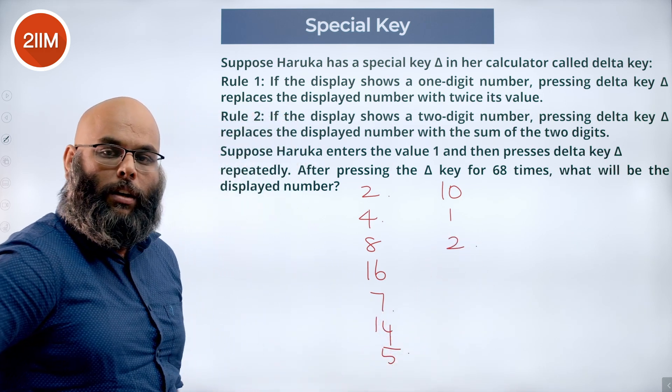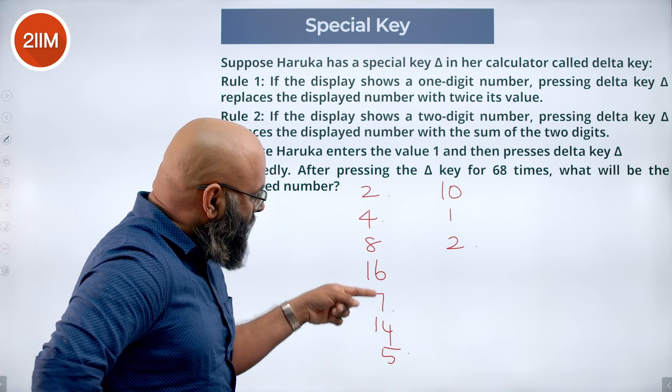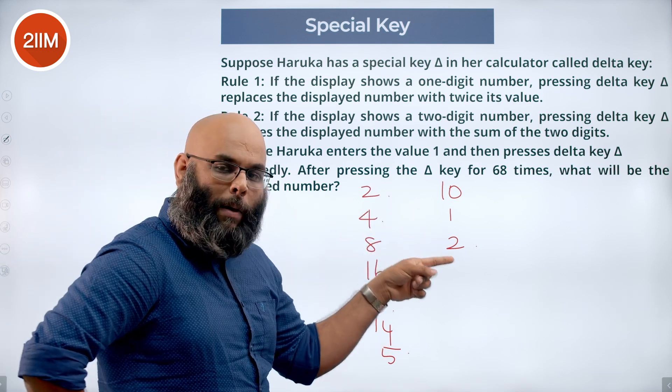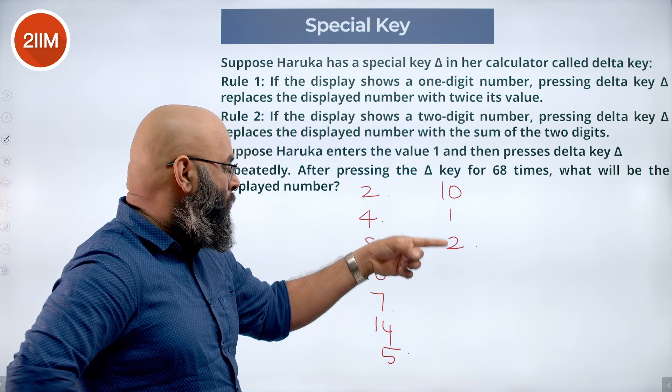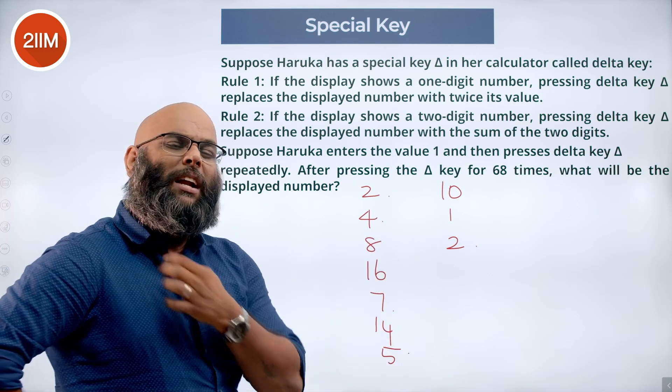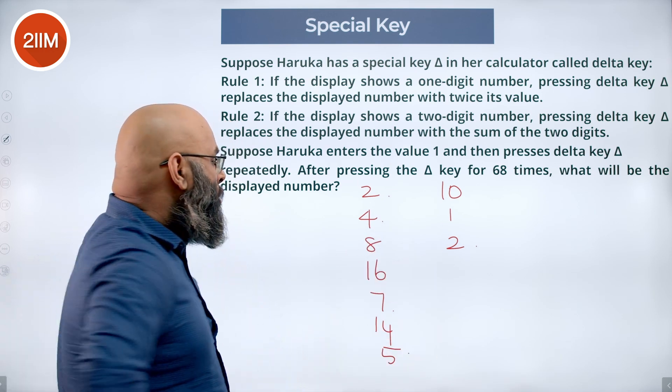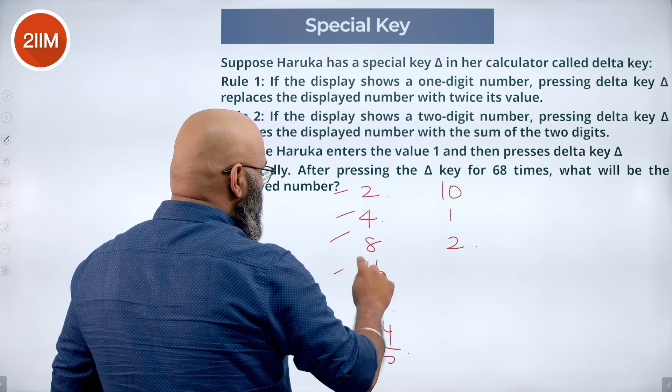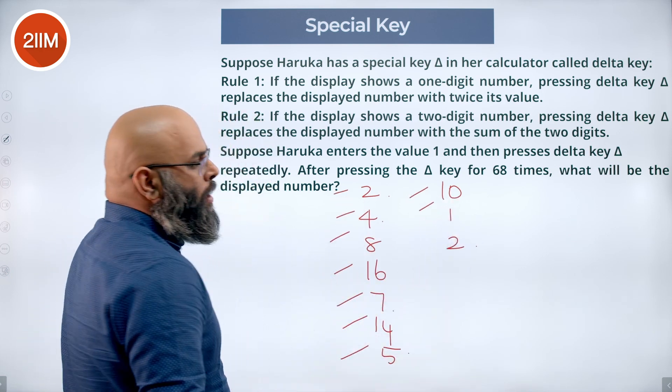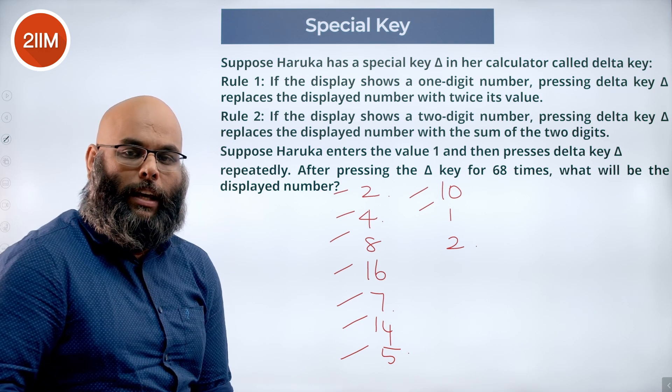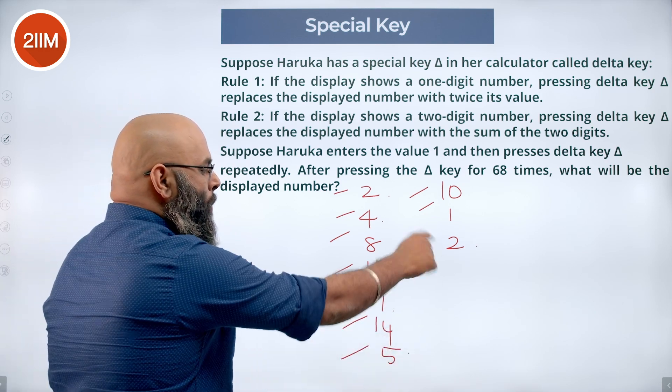So I noticed that after a bunch of iterations pressing delta key, I go back to 2. From 2 again, it will go to 4, 8, 16. So we clearly have a pattern: 1, 2, 3, 4, 5, 6, 7, 8, 9. After every 9 delta keys, we get the same number.